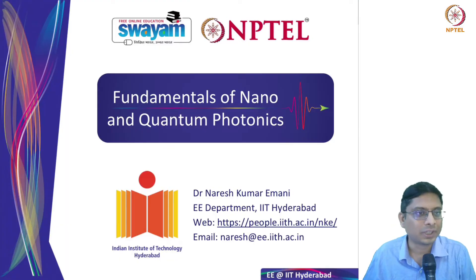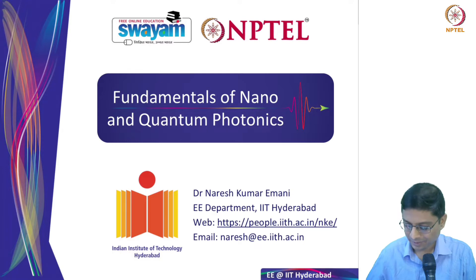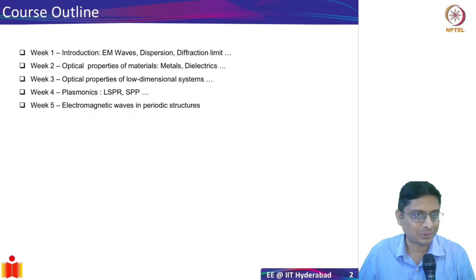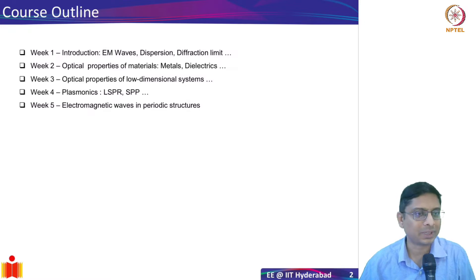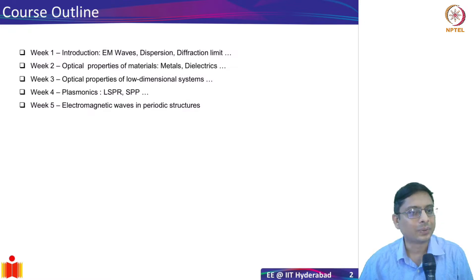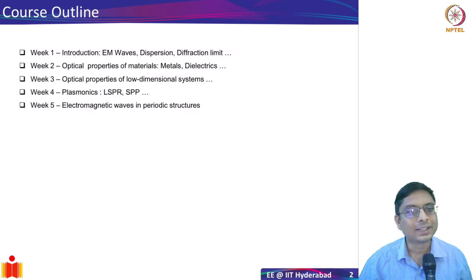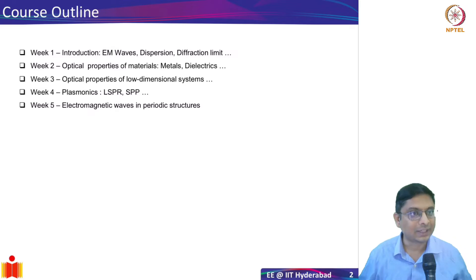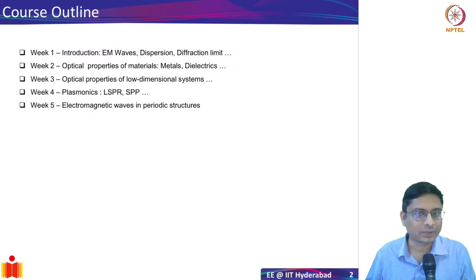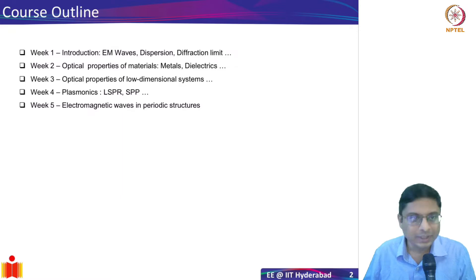Hello everyone, welcome back to Fundamentals of Nano and Quantum Photonics. This is the fifth week of the course. So far we have seen the basic introduction to electromagnetic waves, the optical properties of metals and dielectrics, optical properties of quantum confined nanostructures, and then we started introducing what happens when light interacts with metal nanostructures — that was last week on plasmonics. This week I want to talk about how electromagnetic waves interact with periodic structures.